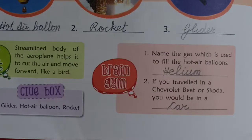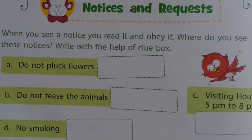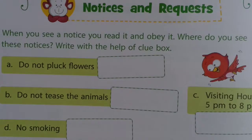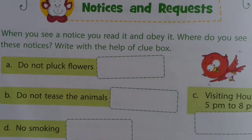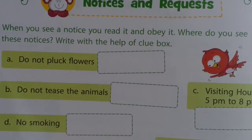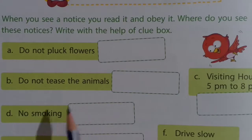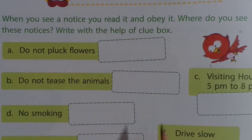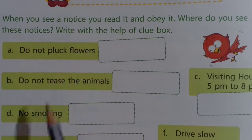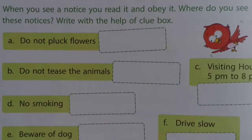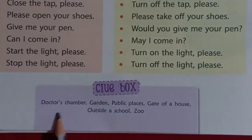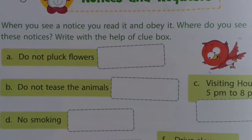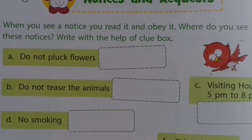Now open page number 46. This is page number 46 — Notices and Requests. When you see a notice, you read it and obey it. There are some notices written here. We will find out where you see these notices. There is a clue box at the bottom of the page. With the help of this clue box, we will fill in the blanks. 'Do not pluck flowers' — where is it written? In the garden. Spelling: G-A-R-D-E-N.